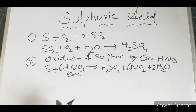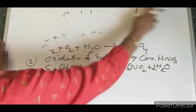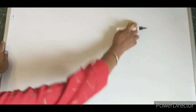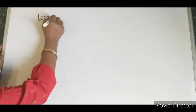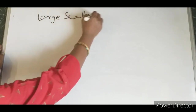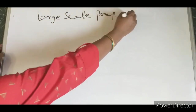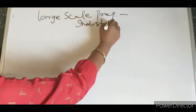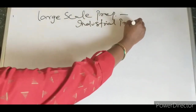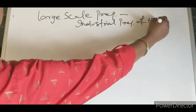These are two general methods of preparation. Now we will see the large-scale preparation of sulfuric acid, also known as the industrial method — the Industrial Preparation of H2SO4.